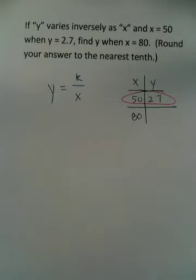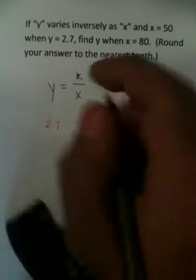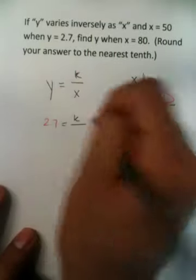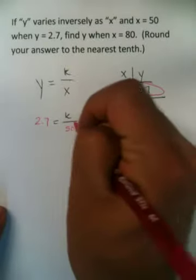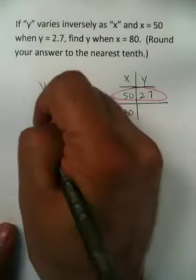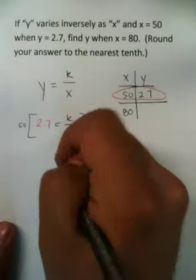So with substitution, basically, y was 2.7, and you had it equal to k all over your 50. So to get k by itself, what you're going to do is you're going to take this, multiply both sides by 50. The 50s will cross out.